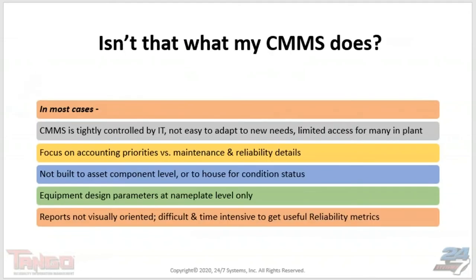A lot of times the question of how to manage this large volume of information comes back to: 'Well, that's what our CMMS — our work order system — is supposed to do.' Unfortunately, those are rarely built with the maintenance or reliability organization in mind. They're controlled by IT and tend to focus on bean counting — tracking manpower, man hours, parts cost, and time-based PM work orders.